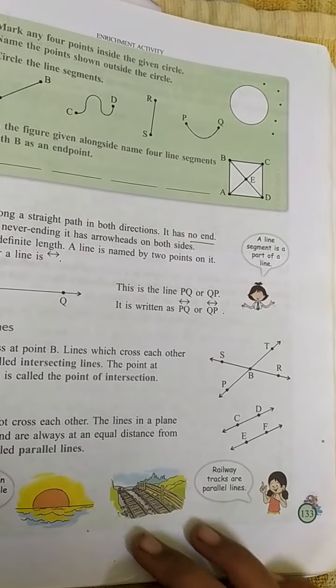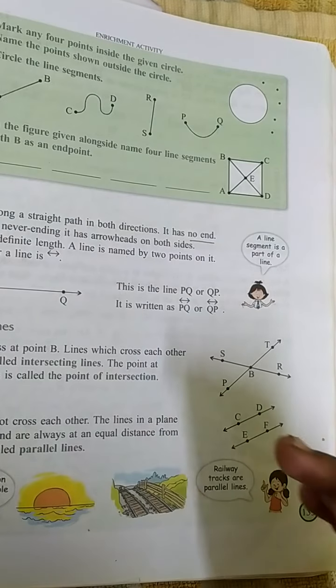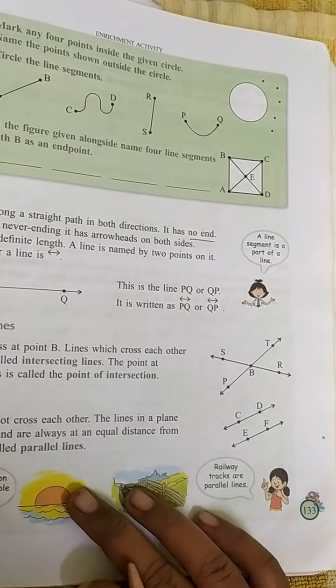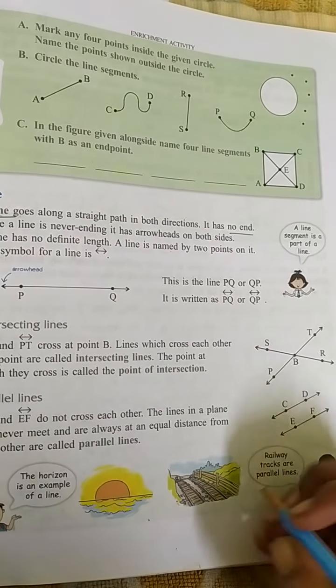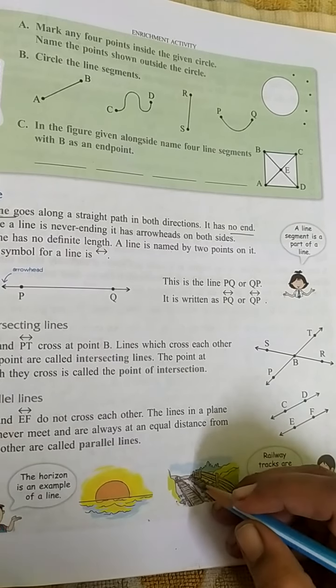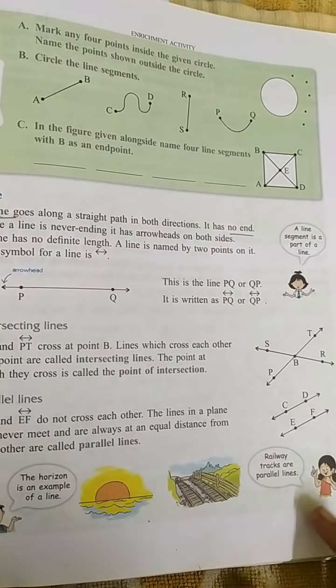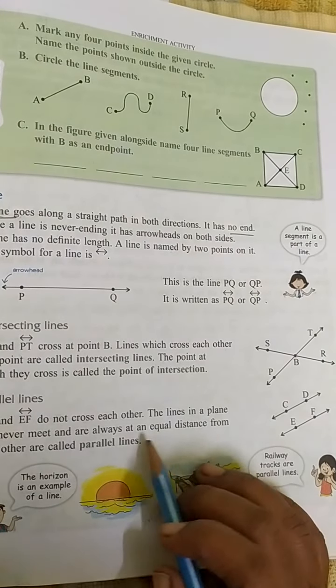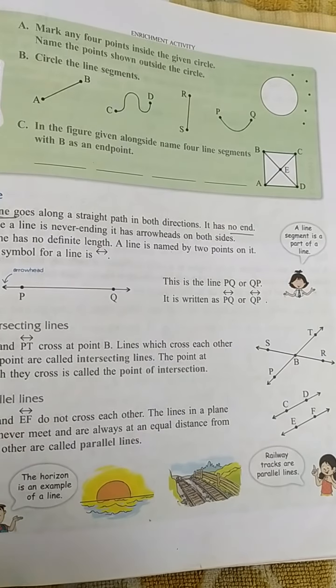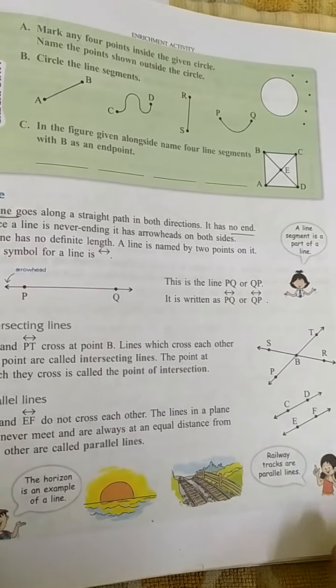Parallel lines. These lines never meet each other, but they will always be at an equal distance from each other. We call it parallel lines. See, look at the railway track. They will go side by side but they will not meet at any point. They will always travel at an equal distance. The best example for parallel lines is railway tracks.